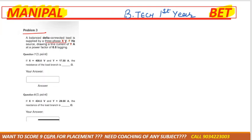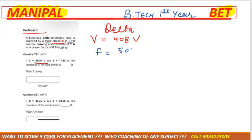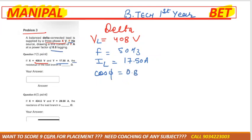Problem 3: A balanced delta-connected load is supplied by a three-phase source. The voltage is given as 408 volt, frequency is 15 Hz (if not mentioned, consider line voltage only), drawing a line current IL of 17.50 ampere at a power factor of 0.8 lagging.